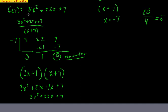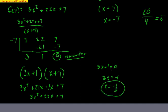So my two factors are 3x plus 1 and x plus 7, just like 4 times 5 multiplies to get 20. The other zero: set 3x plus 1 equal to zero, subtract 1, divide by 3, and get x equals negative 1/3. So the two zeros are negative 7 and negative 1/3.